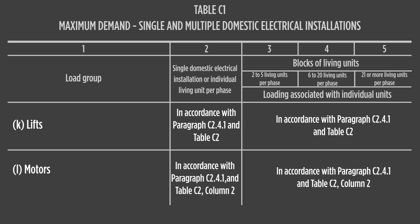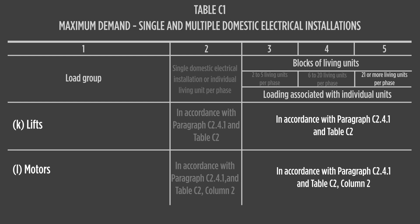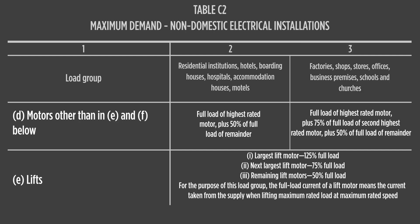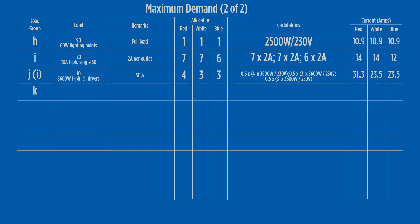In Table C1, load groups K and L require the user to reference paragraph C2.4.1 and Table C2 for loading. In column 2 of Table C2, we find the load allocation for lift motors. The installation has two 12-kilowatt three-phase lift motors with a current draw of 22 amps. 125% of full load current is allocated to the largest motor for maximum demand. As both lift motors are the same size in this case, either can be used. The second motor is allocated 75% of full load, giving us 44 amps for the lift loading calculation.